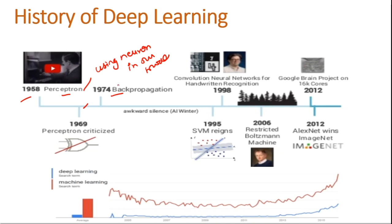In 1974, Geoffrey Hinton — known as the brain of Google — introduced backpropagation. In 1998, they developed a CNN, which is a convolutional neural network, for recognizing handwritten digits. In 2006, they developed a restricted Boltzmann machine, a neural network where each neuron was connected to every other. Later in 2012, there was the Google Brain project, which developed a model for cat classification and deployed it on a 16,000-core CPU.